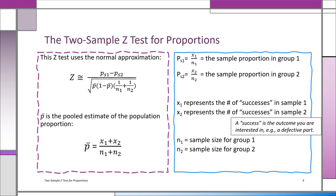Now notice the formula for z requires under the square root sign in the denominator a p bar. It requires the pooled estimate of the population proportion, and what this is is basically the sample proportion if you had not split your data into the two different groups.